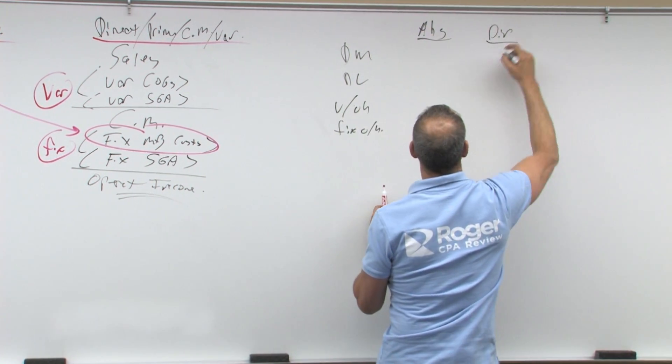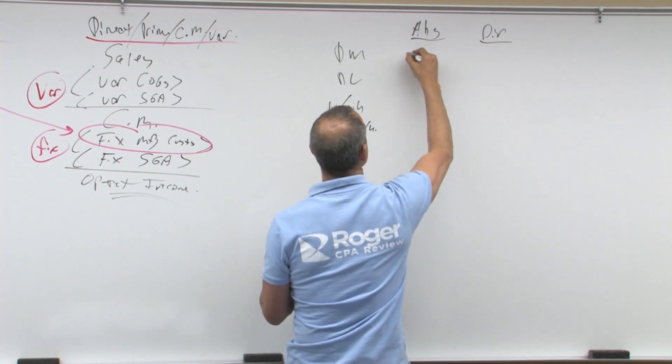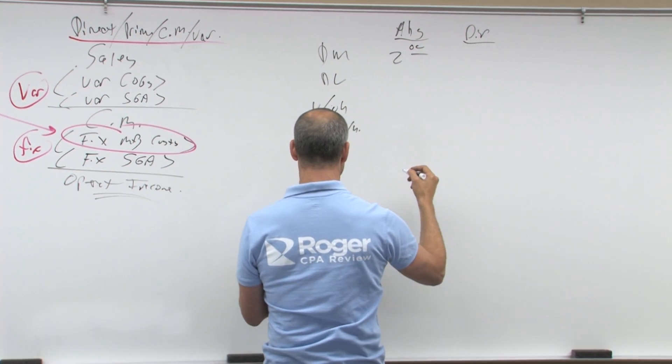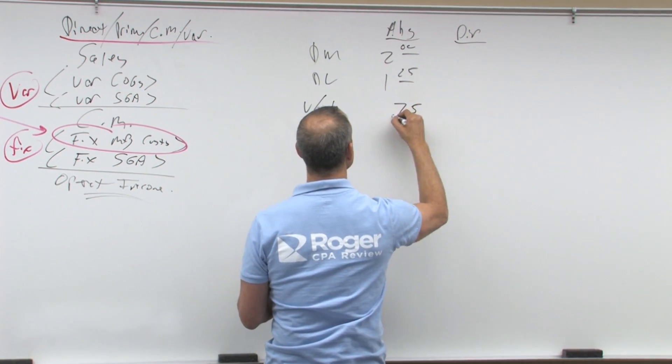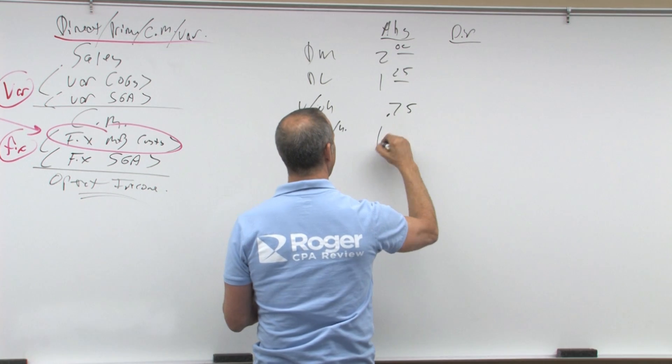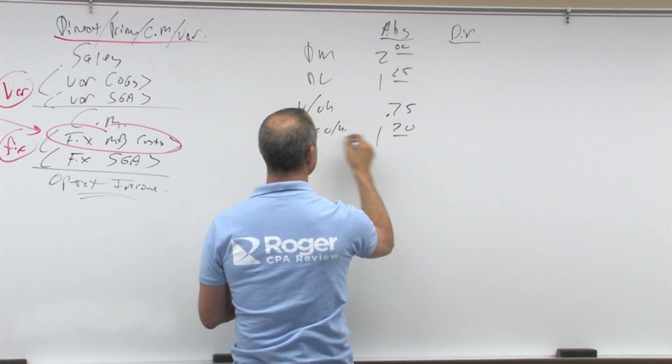Absorption and direct, okay. Let's say I've got $2 of direct materials, $1.25 of direct labor, 75 cents of variable overhead, and I have $1.20 of fixed overhead.